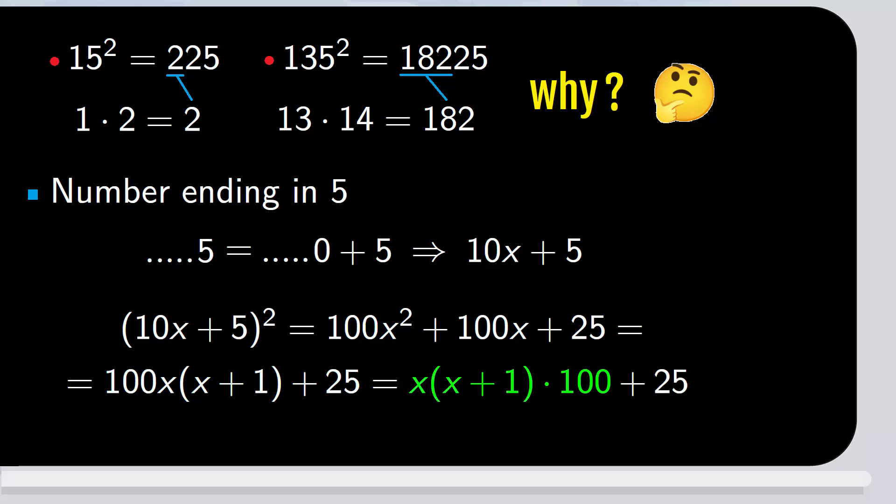There's a factor of 100, which doesn't influence the last two digits, which will be 2, 5. So, we have the product of the number in front, times the following number. And now you can see why the trick will work every time.